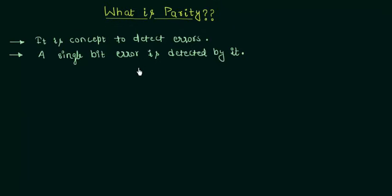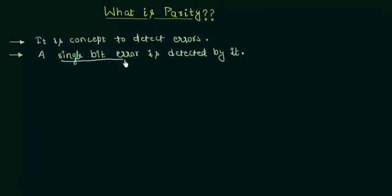A single bit error is detected by it. If there is an error in two or more bits, then parity is not going to tell you about the error because it is only for a single bit error.